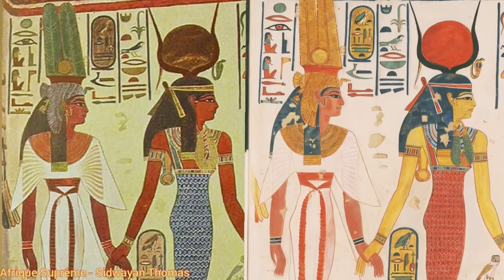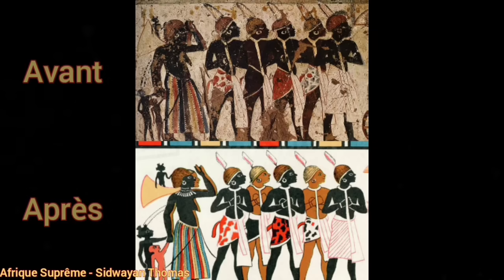Sur cette nouvelle fresque, l'image de gauche est l'image originale, avec deux personnages de couleur noire foncée. Sur l'image de droite, nous avons la falsification : l'un des personnages noirs est devenu blanc et l'autre est devenu jaune. Nous allons terminer avec une fresque où l'image du haut représente la fresque avant le blanchiment — on n'y voit que des personnages noirs — tandis que l'image du bas correspond à la même fresque après le blanchiment, où apparaissent des personnages à peau claire, ainsi qu'un petit enfant tout blanc tenant la main de sa mère noire.